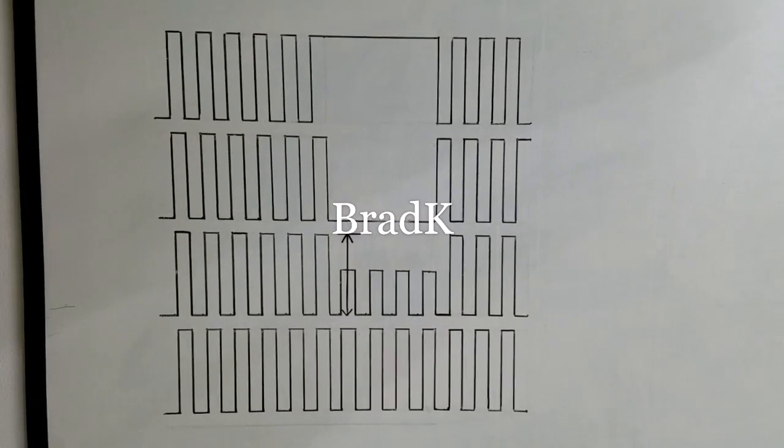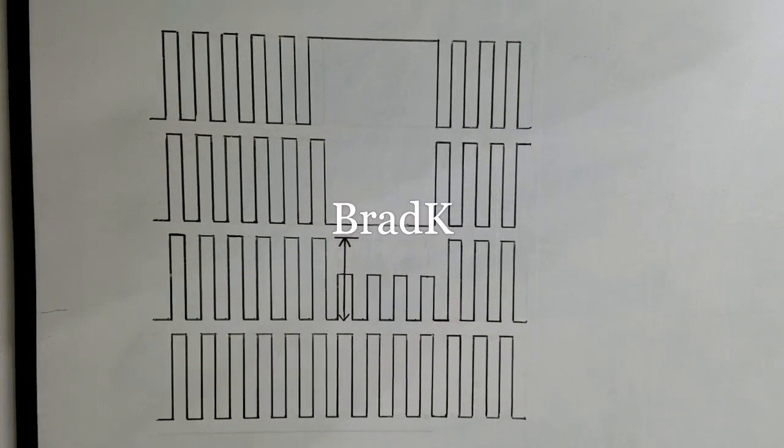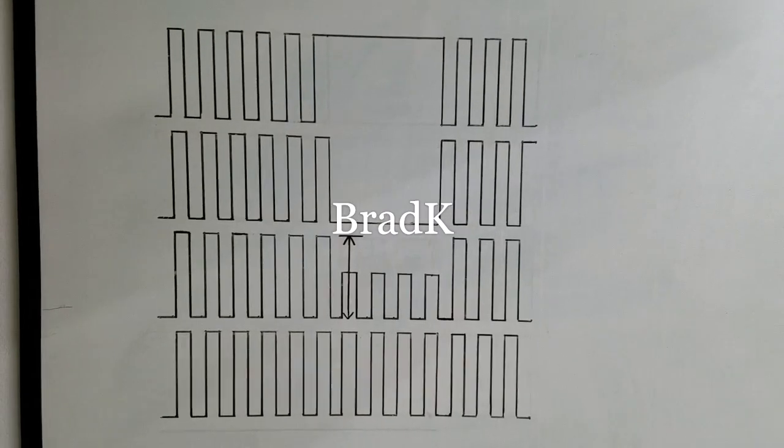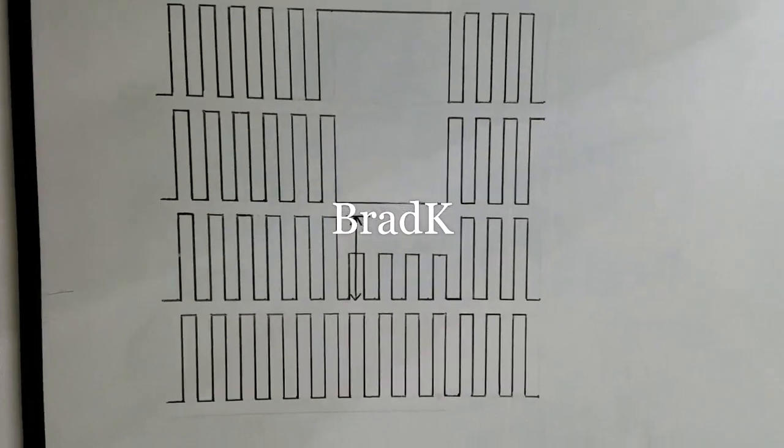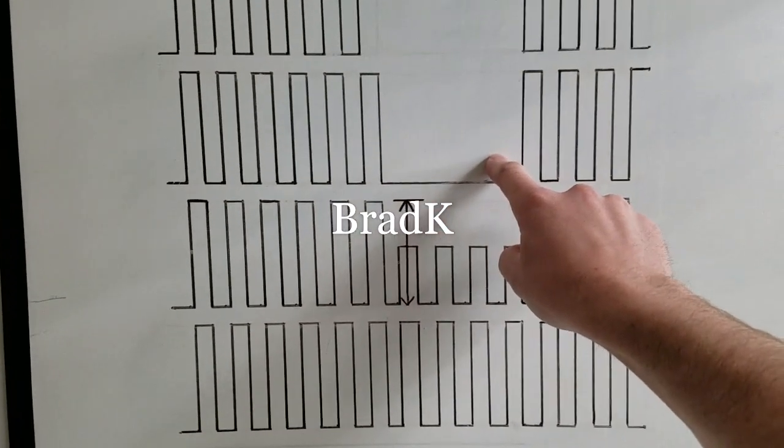Alright, so option one, you've got a high signal during the gate time, which means in this case you actually have current flowing through the primary coil during the gate time. Second option, no current's flowing through the primary coil during the gate time.